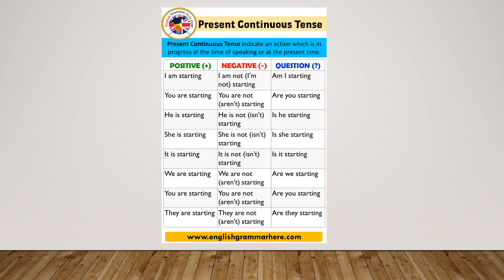In the present continuous tense, negative forms are made using NOT. Negatives in the present continuous are formed by adding NOT after the verb BE. For example, 'I am starting' is a positive sentence and the negative of this sentence will be 'I am NOT starting.'